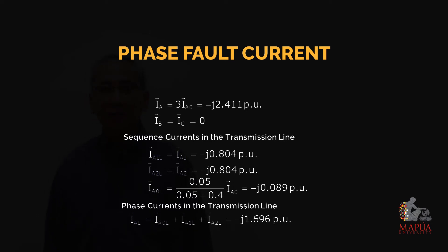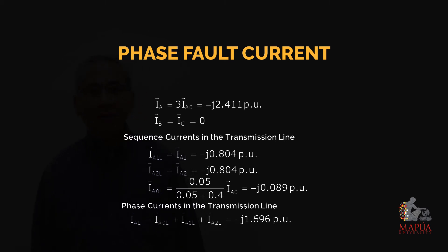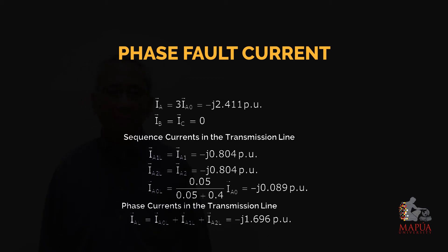For the sequence currents in the transmission line: IA1L = IA1 = -j0.804 per unit, and IA2L = IA2 = -j0.804 per unit. For IA0L, using the current divider principle, that equals IA0 multiplied by j0.05 divided by (0.05 + 0.05 + 0.4), giving -j0.089 per unit.